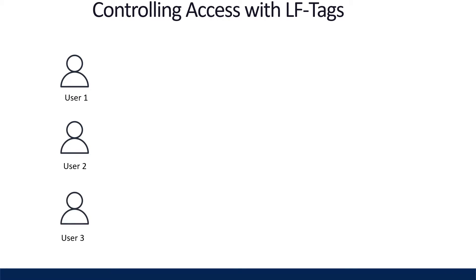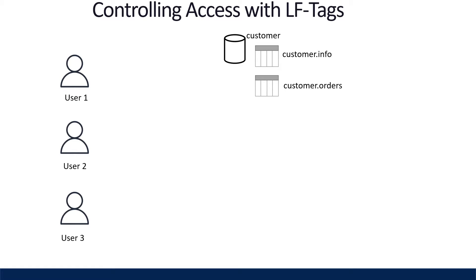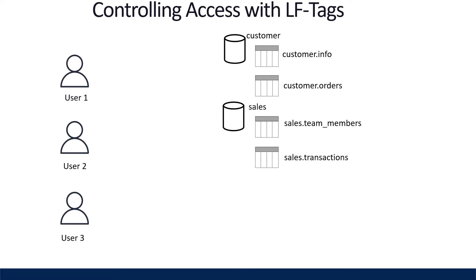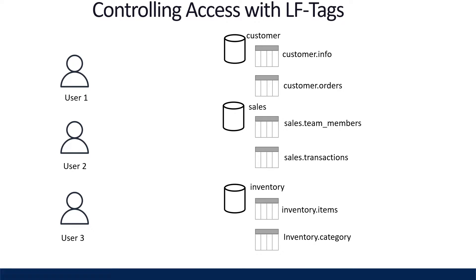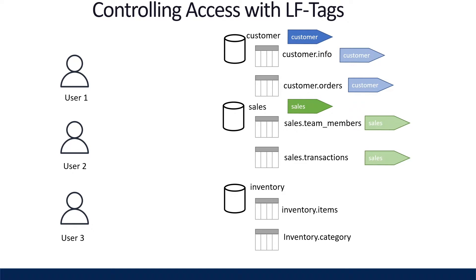Let's look at an example of controlling access with LF tags. We have user one, user two, and user three. For resources, we have a customer database with a customer info table and an orders table, a sales database with team members and transactions, and an inventory database with an items table and a category table. We can assign a tag of 'customer' to the customer database, and the customer info and orders tables automatically inherit this tag. Doing the same for the sales and inventory databases gives us three tags assigned at the database level.